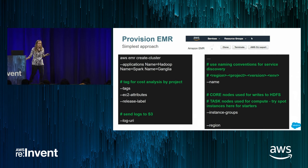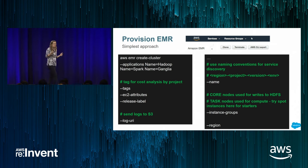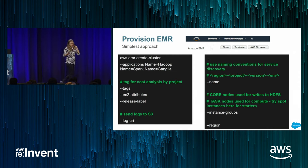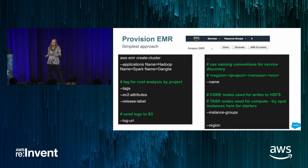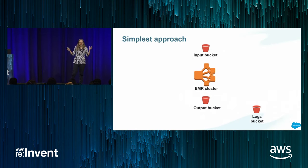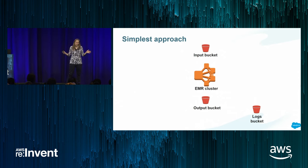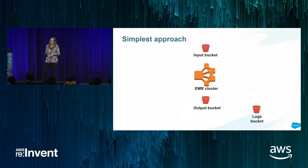When selecting instance groups, core nodes run the DataNode service and handle HDFS writes, while task nodes are pure compute with no HDFS responsibility — making them good candidates for Spot instances. The simplest architecture: read input data from an S3 bucket, run your job on the EMR cluster, write output to an S3 output bucket, and send EMR logs to S3. This way, once compute is done, you don't need to keep the cluster running.